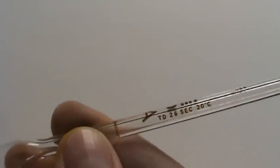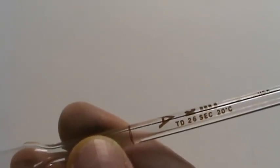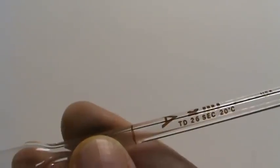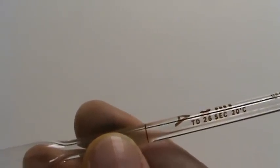And like with everything else, let's make sure that we read the rest of the label. This is a class A pipette. That probably doesn't mean a whole lot to us right now. It's five milliliters. It's made by Chimax in the USA. And what else does it say?